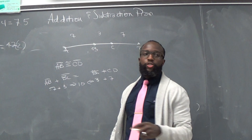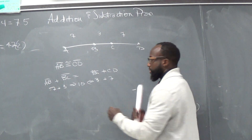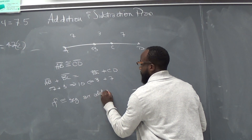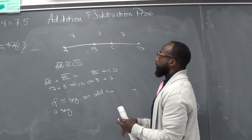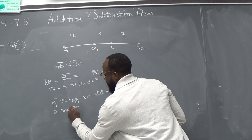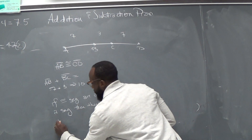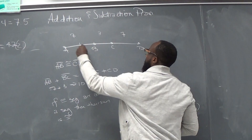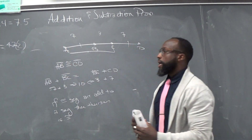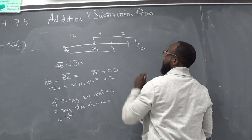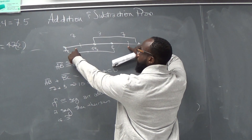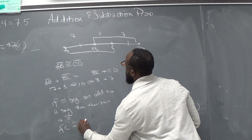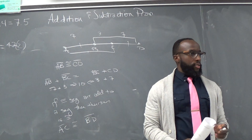With that being said, we've come to our new theorem — Theorem 8. That basically says if congruent segments are added to a segment, then their sum is congruent. You add BC to AB, you get 10. You take BC and add it to CD, you also get 10. So whenever you add congruent segments to a segment, you get congruent segments again. So AC is going to be congruent to BD.